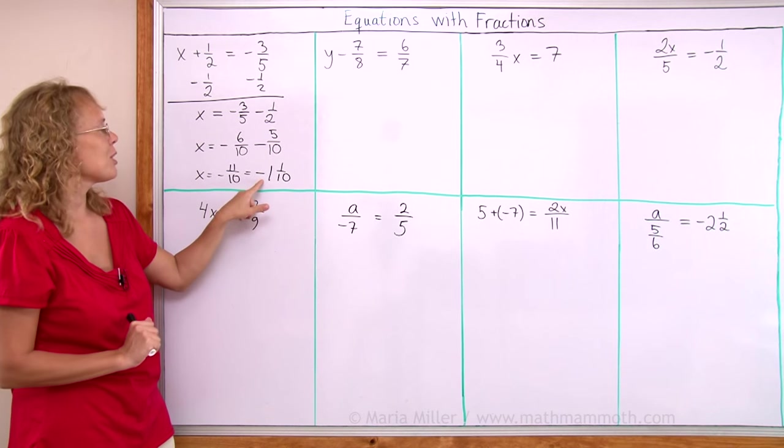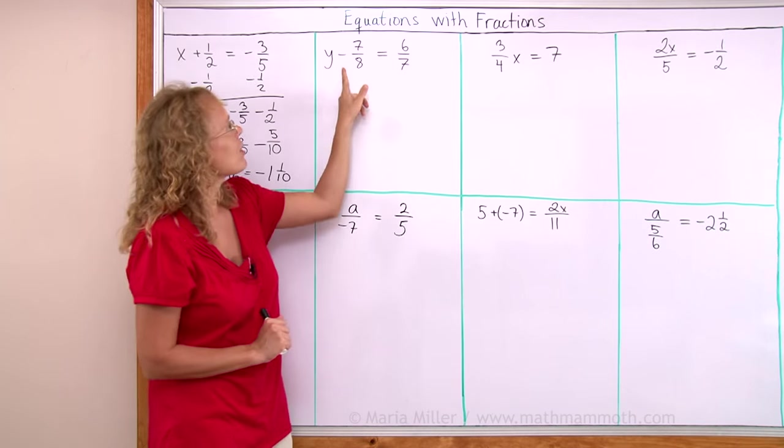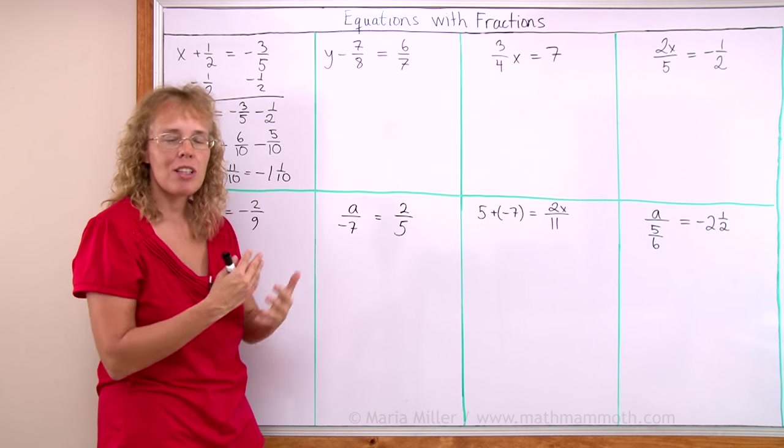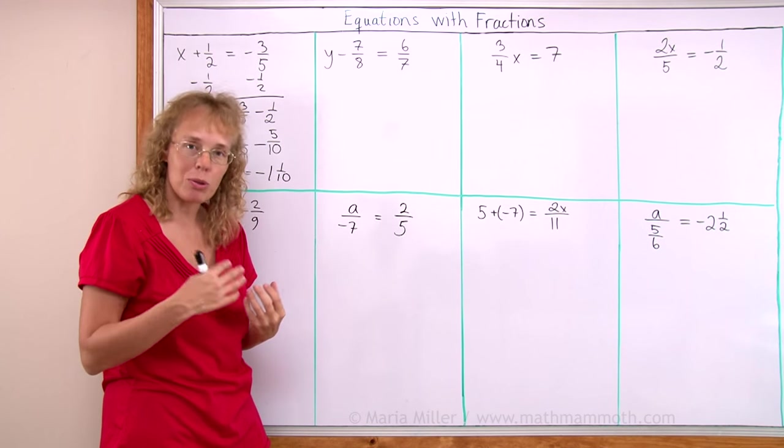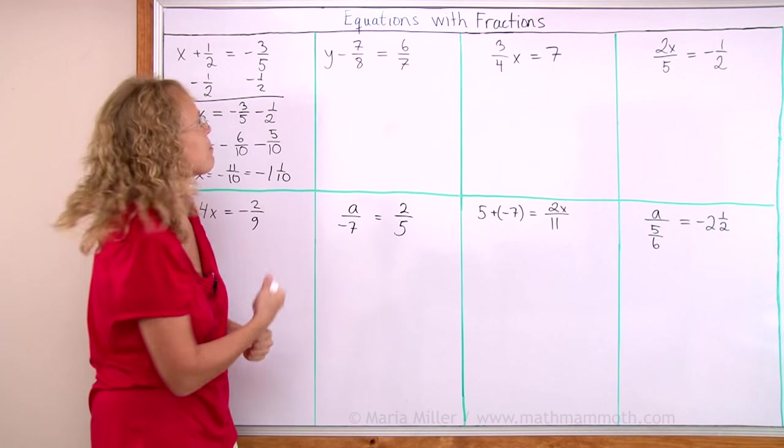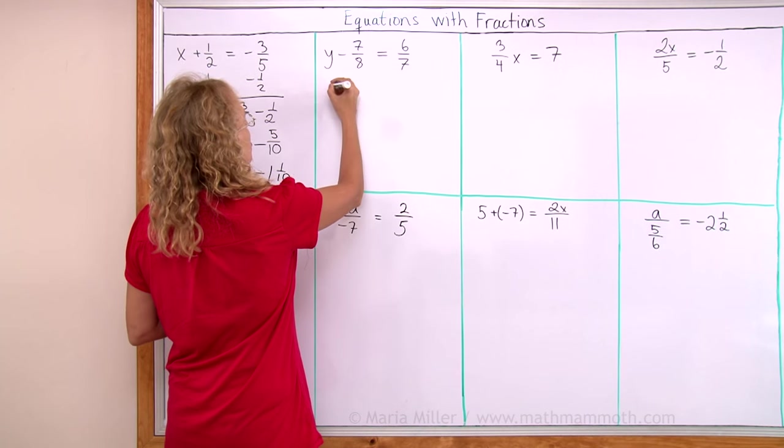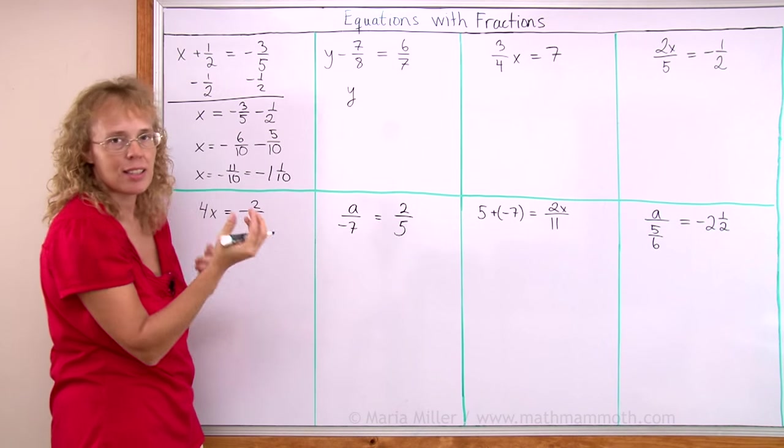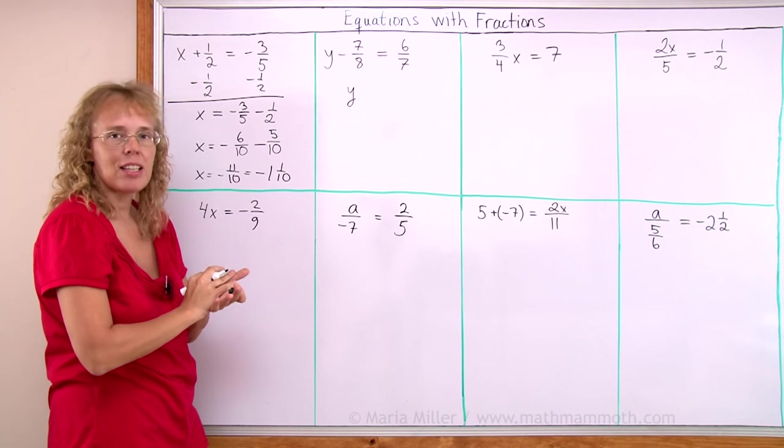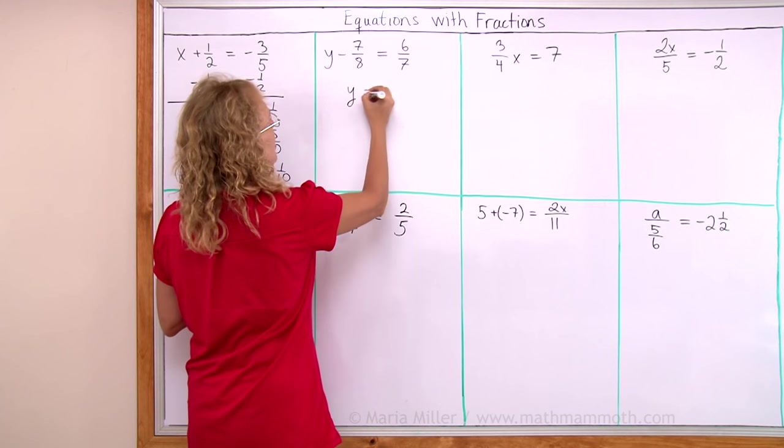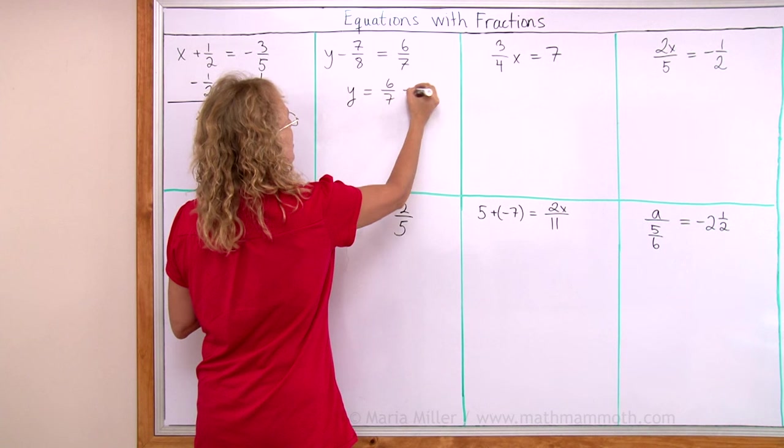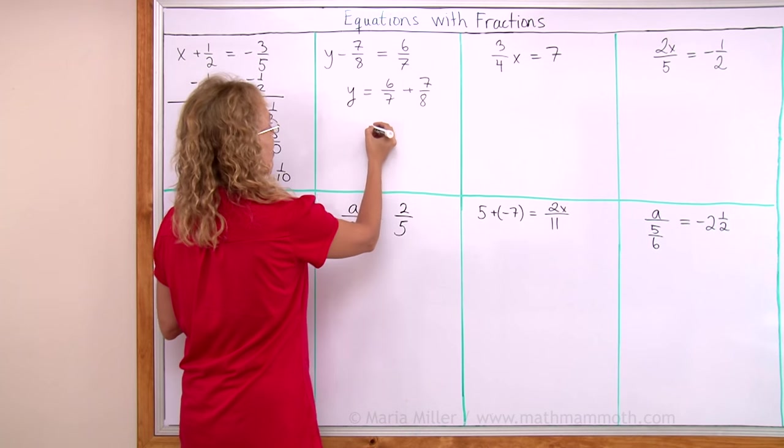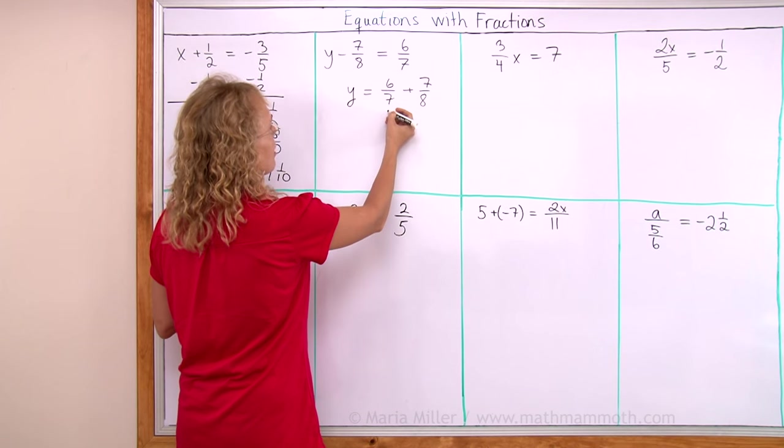Here we have a subtraction equation. From the variable seven eighths is subtracted. So to solve the equation we will add seven eighths to both sides. We will get y alone because when we added the seven eighths, the negative seven eighths and plus seven eighths cancel. On this side we will get this plus seven eighths.